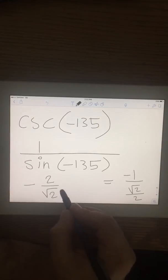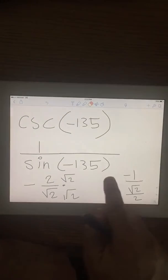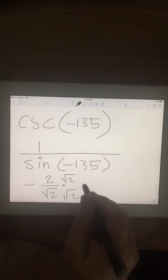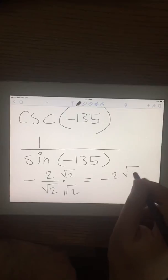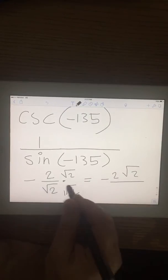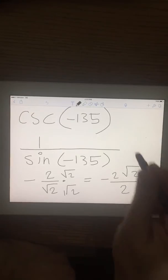Now I rationalize here. And this is equals. So this becomes 2 here. And 2, 2 cancels. So the answer is negative root 2.